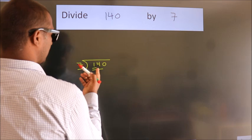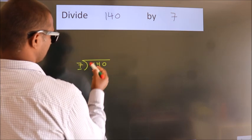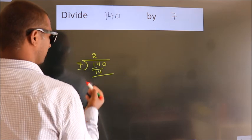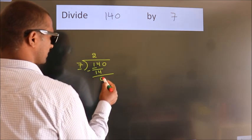When do we get 14? In the 7 table. 7 twos are 14. Now we should subtract. We get 0.